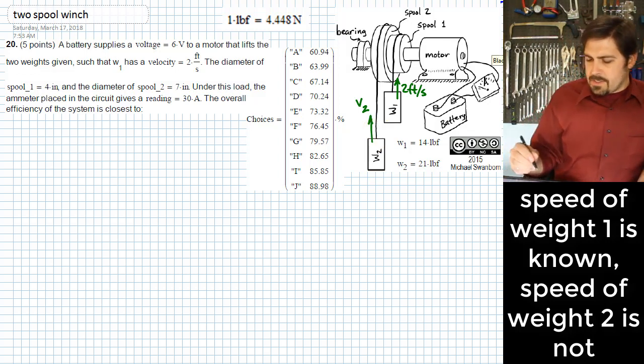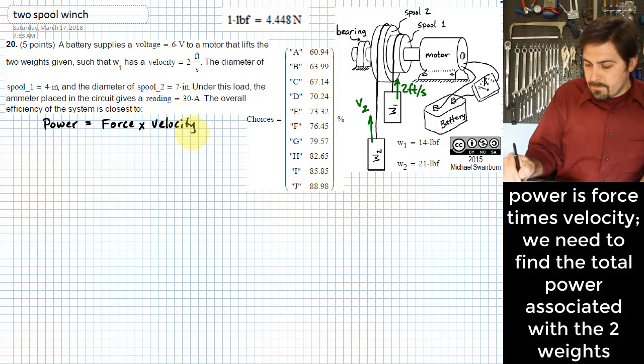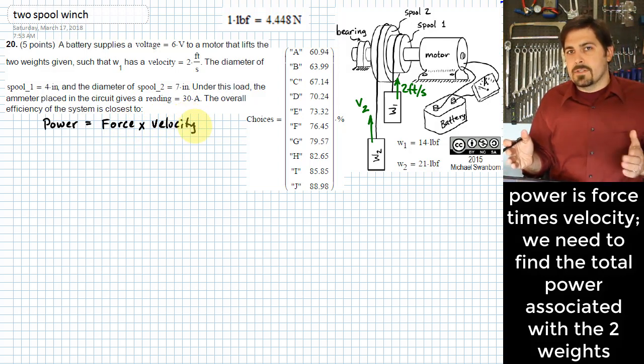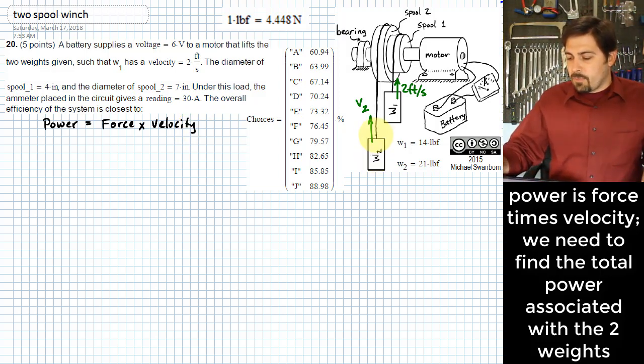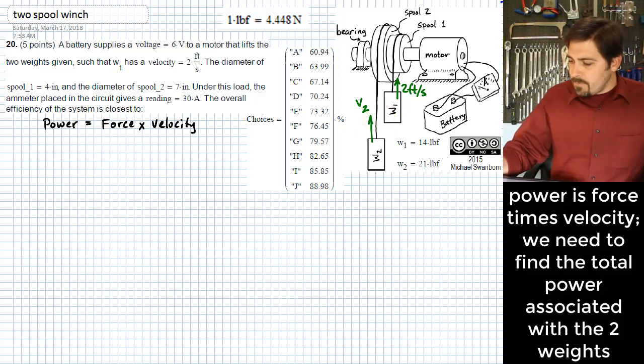The reason I know this is that the basic equation I'm going to start with is that power is equal to force times velocity. If I can figure out the velocity of these two weights lifting, then my total amount of useful energy out of the system is going to be the force in each of these multiplied by the velocity. That gives me my total useful power out. If I divide that by the electrical power I have to deliver, that gives me my efficiency.